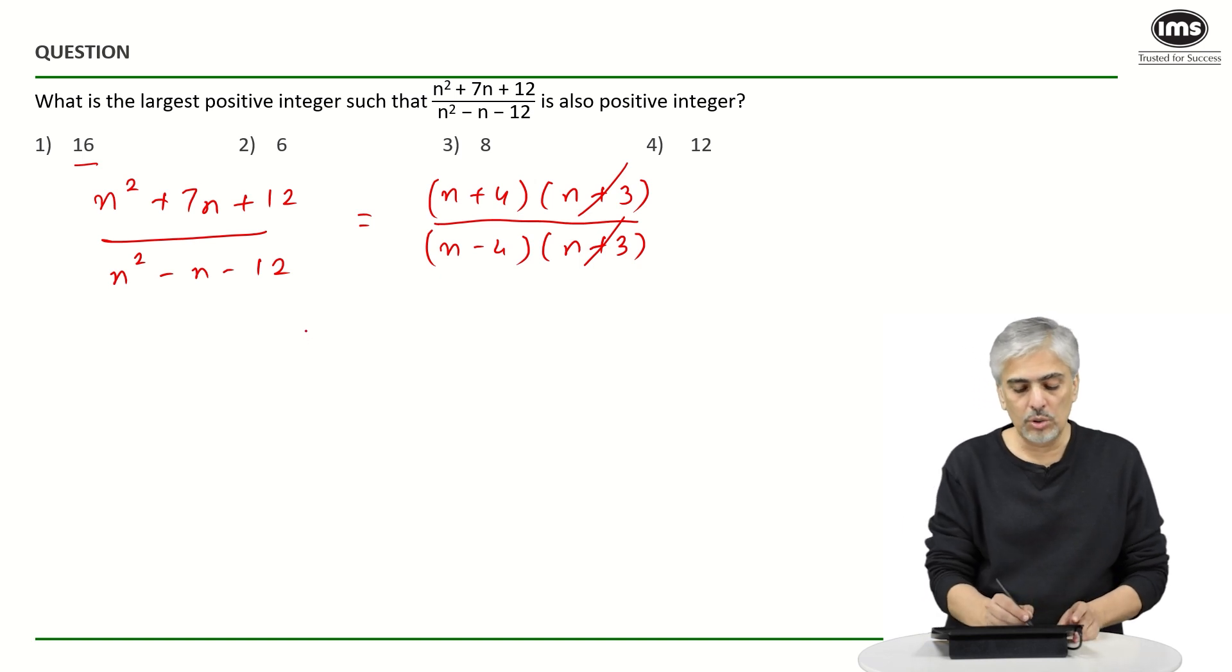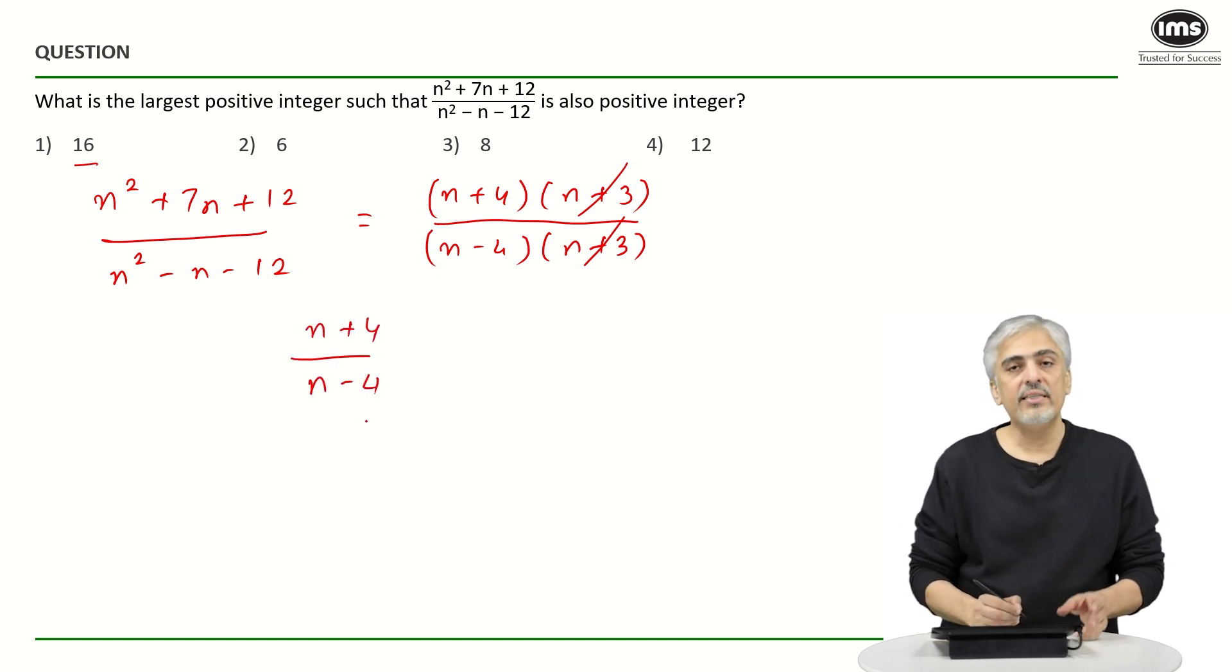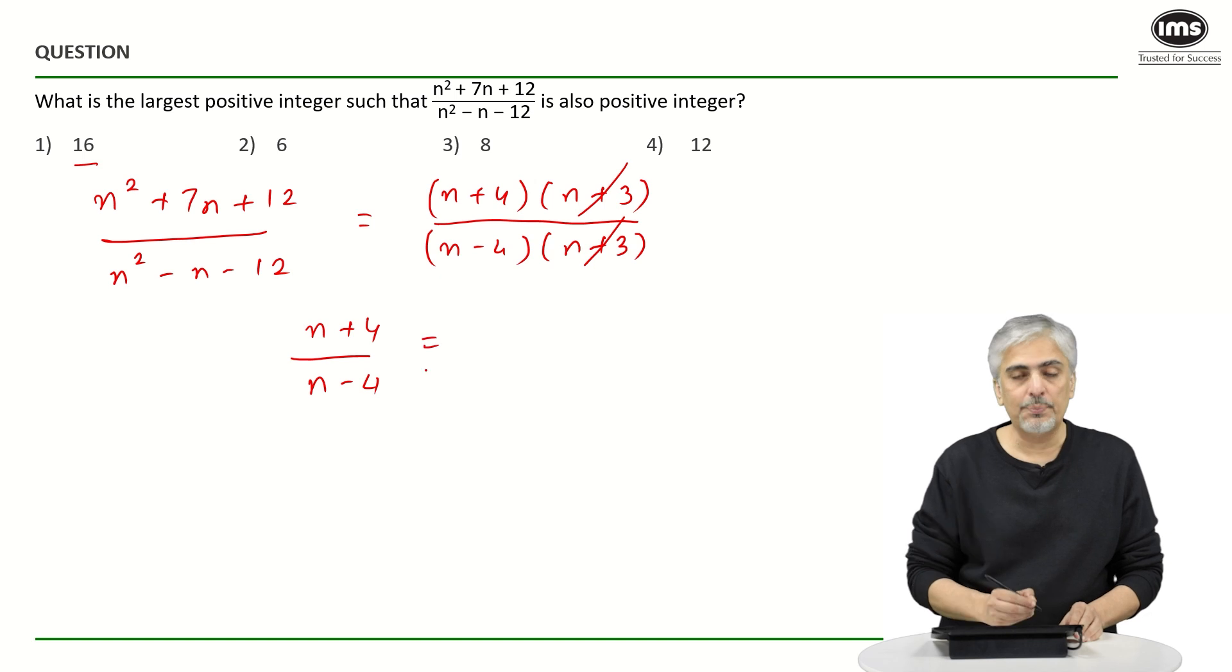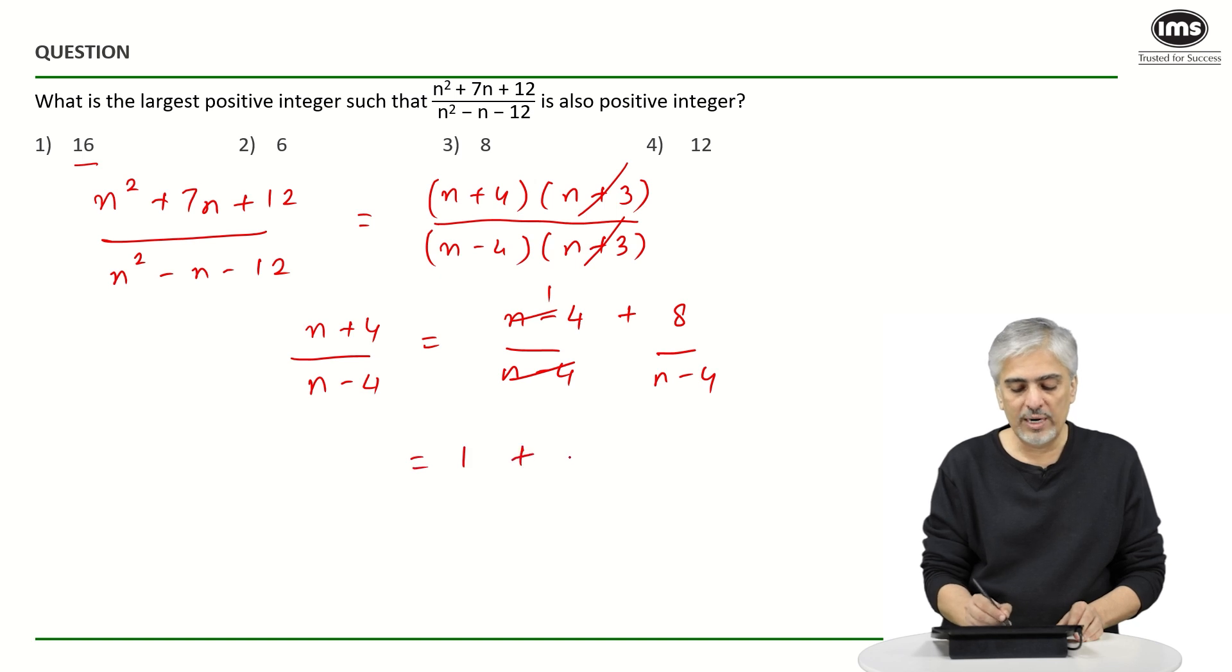After that also, a lot of people tried the same thing. So some people got till here, again started putting the options. Possible, as I said, not wrong, but the better approach could have been this: Write the numerator as n minus 4 plus 8 upon n minus 4. So this part becomes 1. 1 plus 8 upon n minus 4.